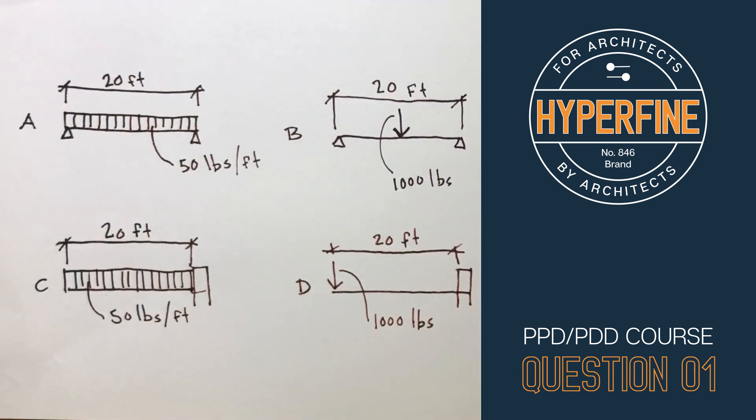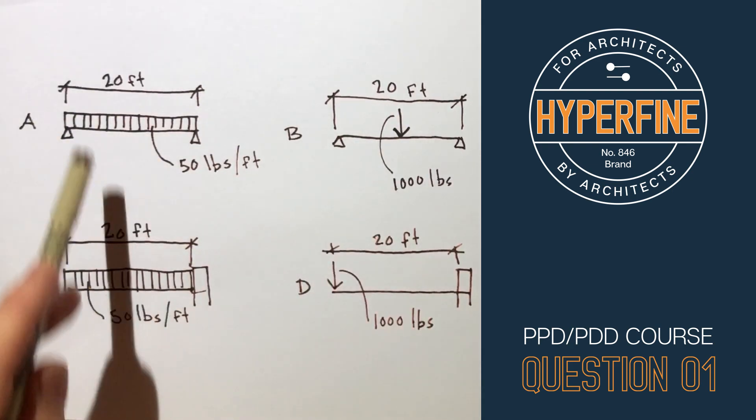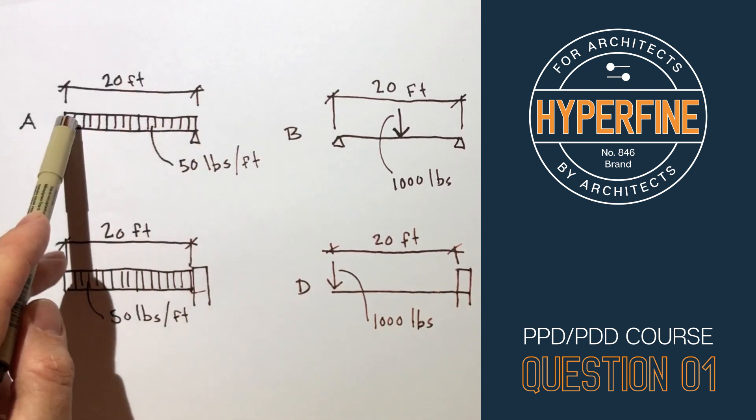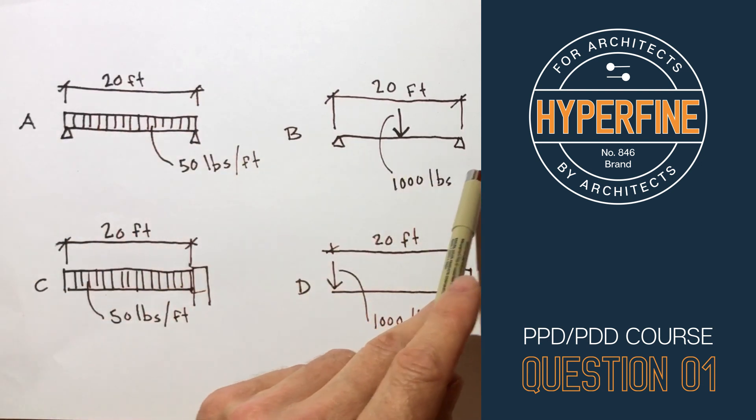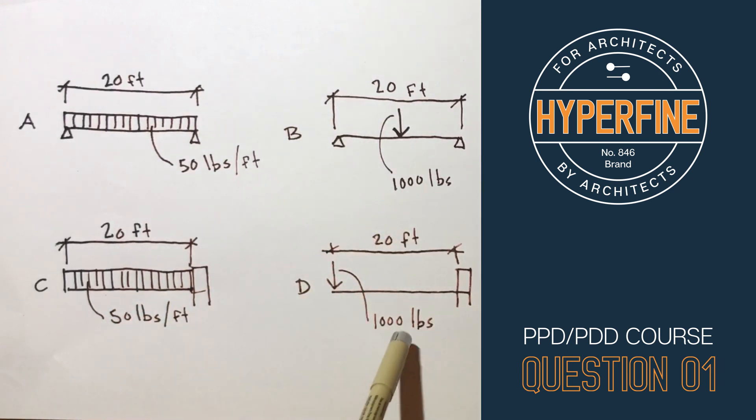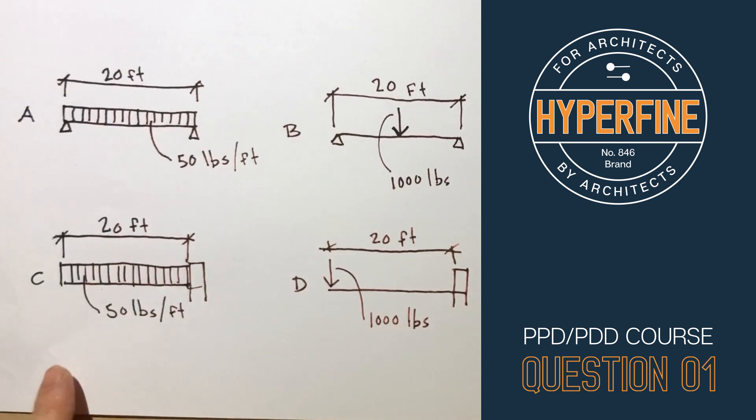Another thing to notice about this question that you might see on the exam is that the weight is the same for all of them. You've got 20 feet with 50 pounds per foot that's a thousand pounds. Here you've got the same span of 20 feet but you've got a thousand pound point load. Here you've got a thousand pound point load and here you've got 20 feet times 50.